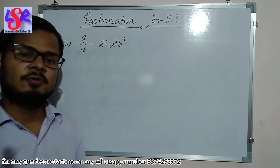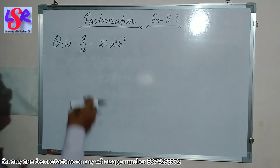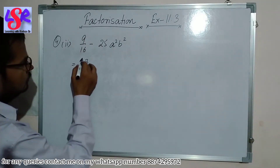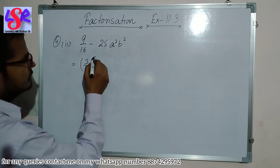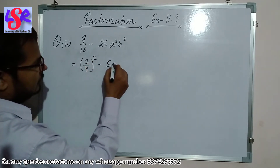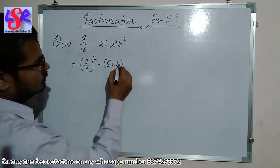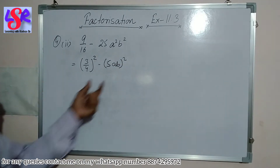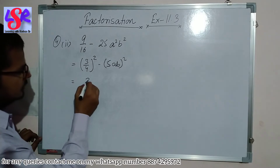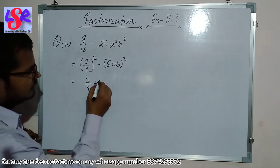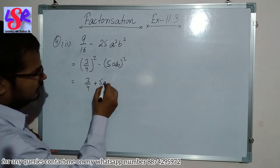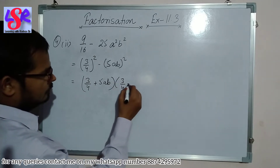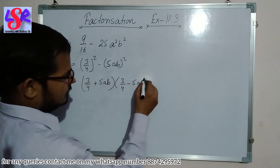Now question 4 second part: 9/16 minus 25a²b². This can be written as (3/4)²-(5ab)². This is in the form of a²-b², and can be written as (3/4+5ab)(3/4-5ab) as the answer.